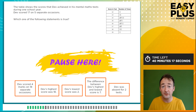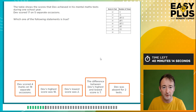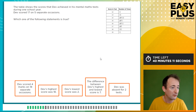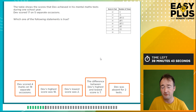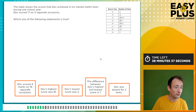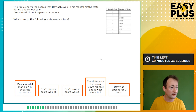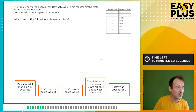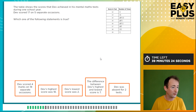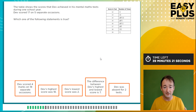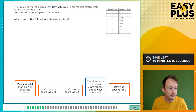We've got a table with some scores Dev achieved in his mental maths test using a tally chart. Dev scored 17 on five separate occasions — that helps you understand how to read the tally. Which statement is true? Dev scored four marks on 18 separate occasions? No — his lowest score was 12. His highest score was 18? No — he scored 19. His lowest score was 2? No — it was 12. The difference between Dev's highest and lowest score is 7: 19 minus 12 is indeed 7. That is correct.